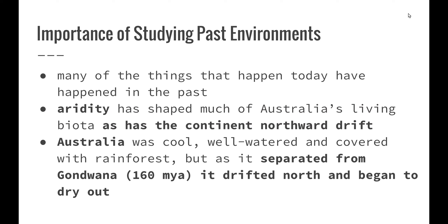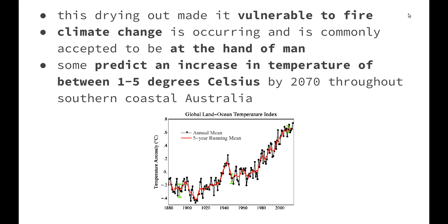Many of the things that have happened today have happened in the past. Aridity has shaped much of Australia's living biota, as has the continent's northward drift into tropical latitudes. Australia was once a cool, well-watered continent covered with rainforest, but as it separated from Gondwana about 160 million years ago it drifted north and began to dry out. This drying out has made it vulnerable to fire, and Australia continues to move north as the climate continues to change.